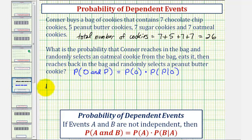So our probability, the probability of O and then P is equal to the probability of selecting an oatmeal cookie. We'll notice how there are seven oatmeal cookies out of the total of 26 cookies, and therefore the probability of selecting an oatmeal cookie would be 7/26 times, now here's where we have to be careful, the probability of selecting a peanut butter cookie given the oatmeal cookie has already been selected.